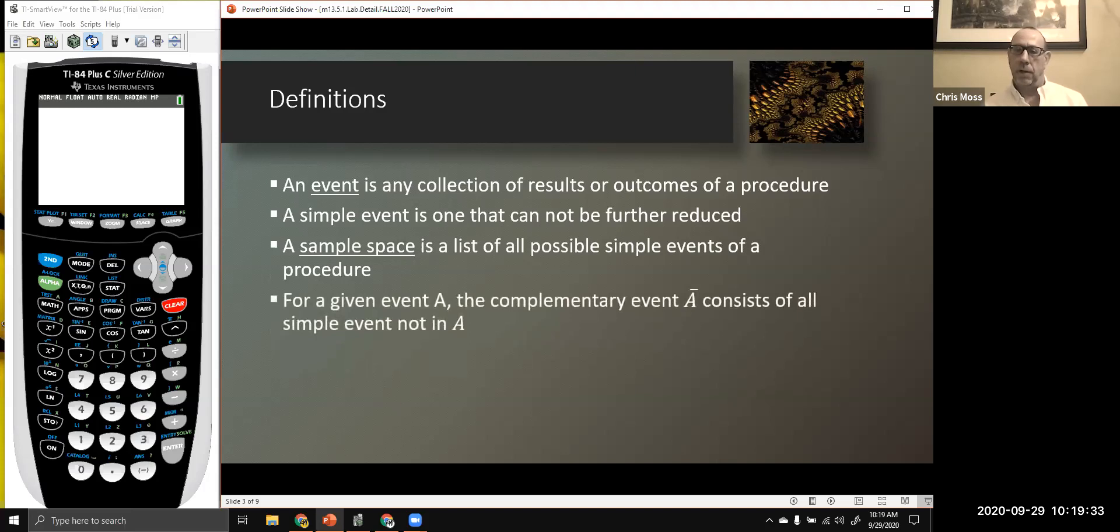We're really going to focus on the notion of a complementary event because that's going to help us frame a lot of our questions in chapter five and beyond. So for a given event A, the complementary event A bar consists of all those simple events that are not in A.